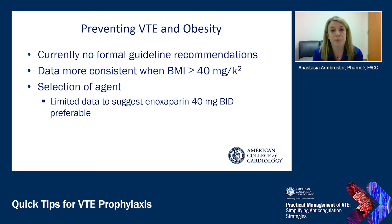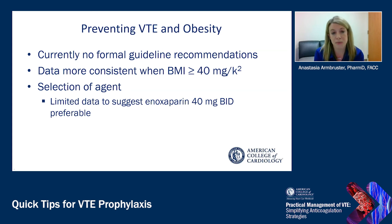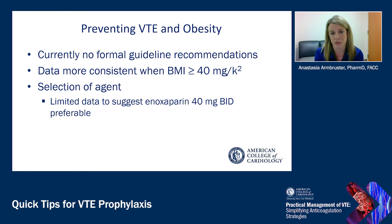Preventing VTE in obese patients is something we all see in practice frequently. There are currently no formal guideline recommendations. The data seems to be more consistent when BMI is 40 or greater — remember, the study at BMI 30 saw no difference. There is some limited data to suggest that enoxaparin 40 milligrams BID may be preferable when selecting an agent in this population.